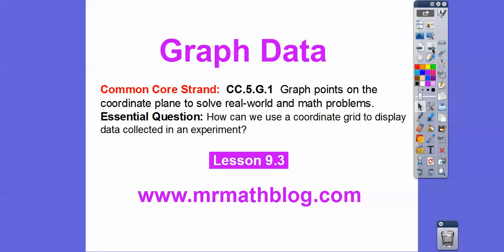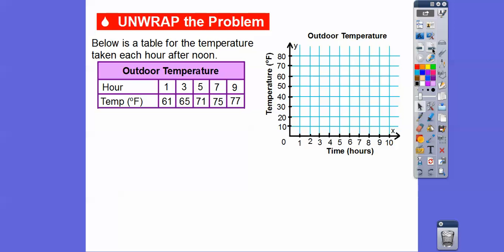There's our common core strand and our question is, how can we use a coordinate grid to display data collected in an experiment? Below is a table for the temperature taken each hour after noon. After 12 o'clock in the afternoon. That's what that means right there.